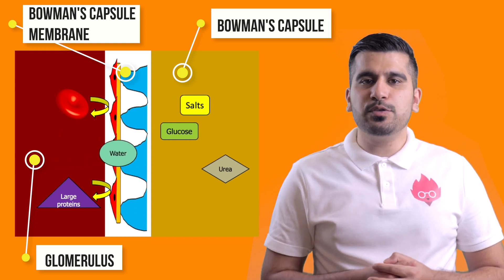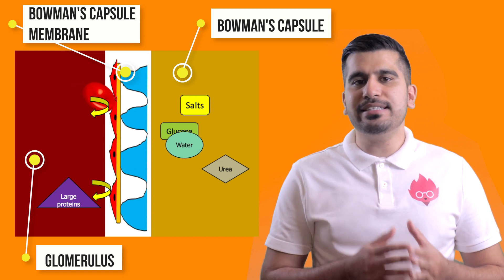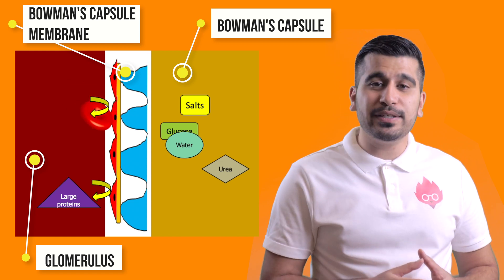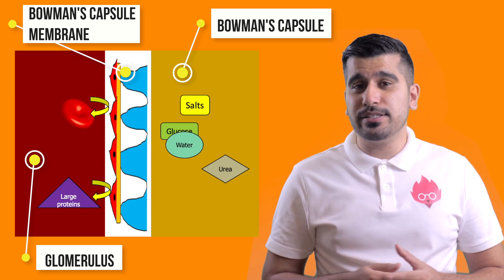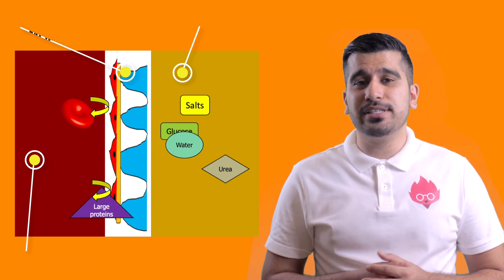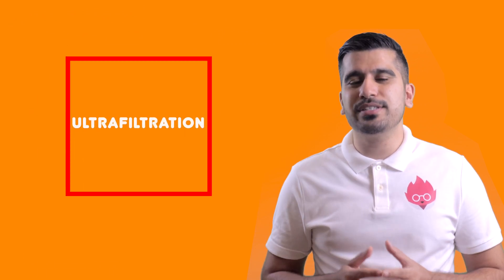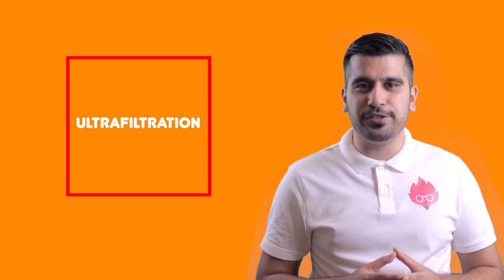The Bowman's capsule membrane filters, preventing larger molecules like red blood cells and large proteins from crossing the membrane. This process is known as ultrafiltration.